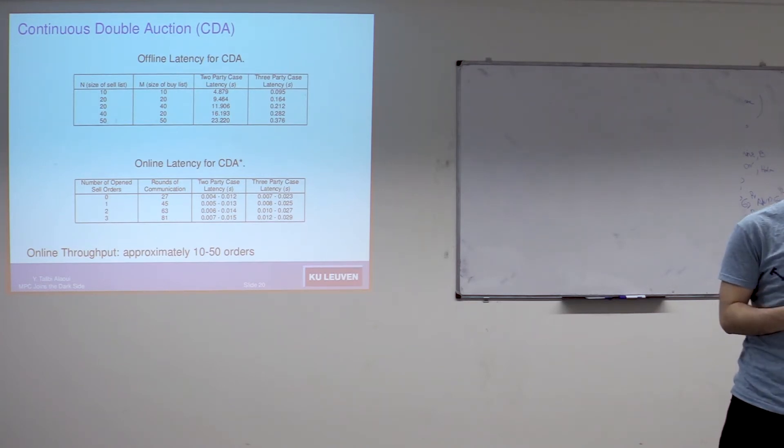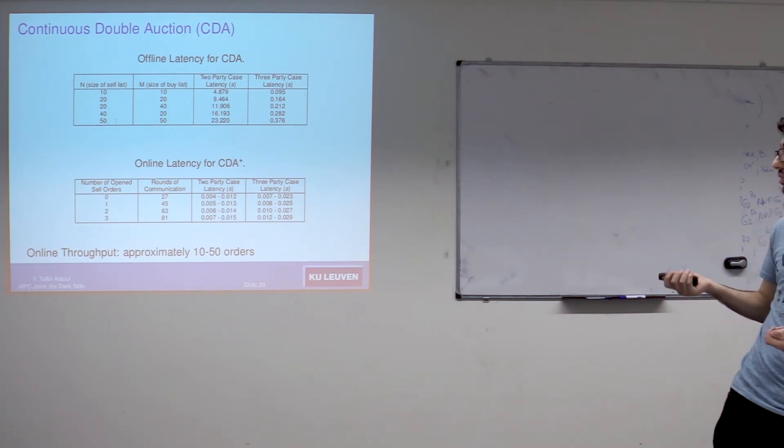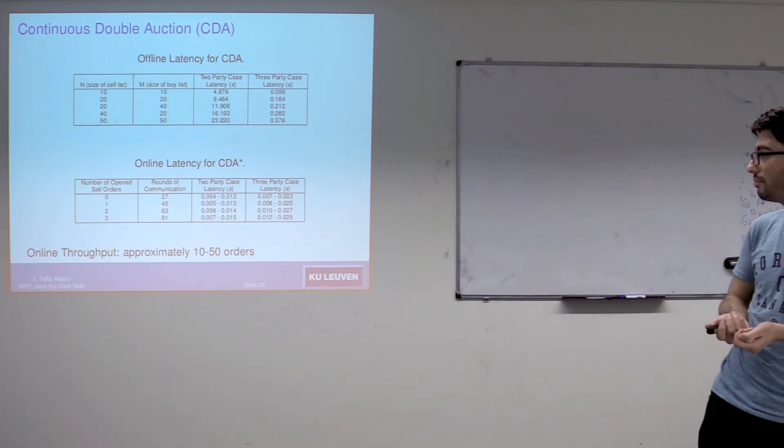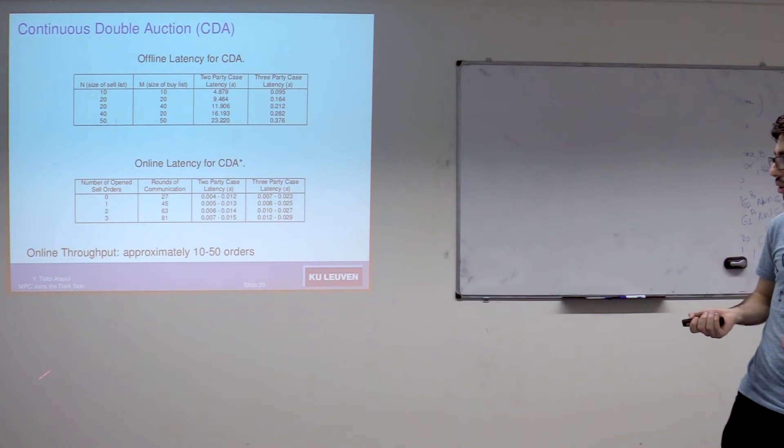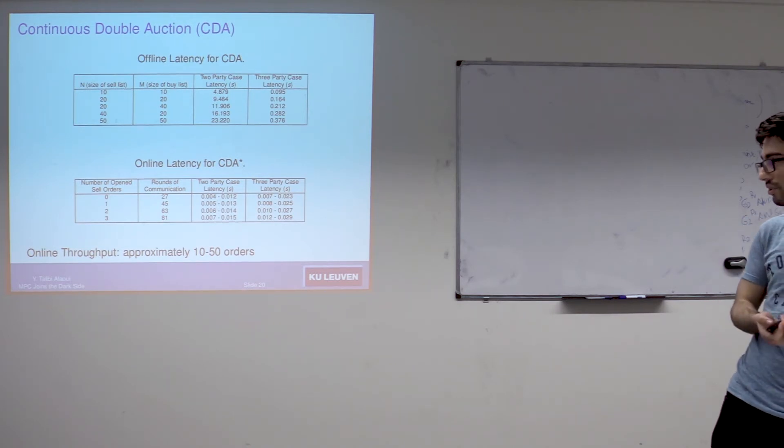For the online phase, we can explain the runtimes we get by the fact that the time it takes for two parties to communicate is smaller than the time that three parties need to communicate. We computed the throughput and we found that it's something between 10 and 50 orders. So we can handle in one second something between 10 and 50 orders, which is something lower than what one would want in a real market.